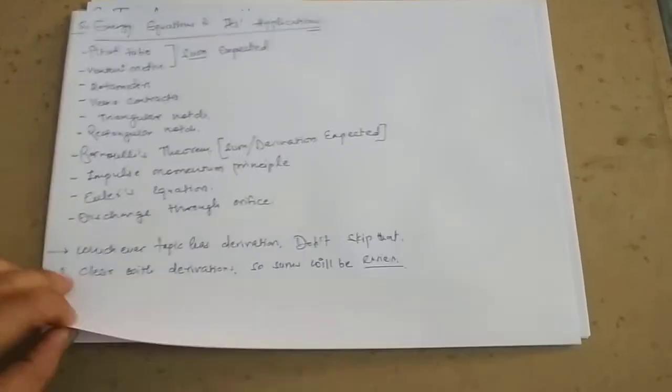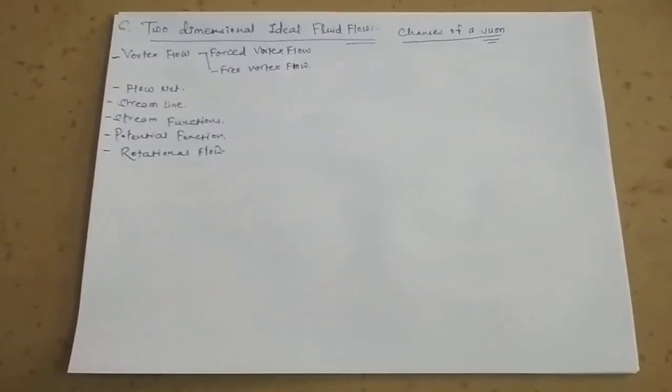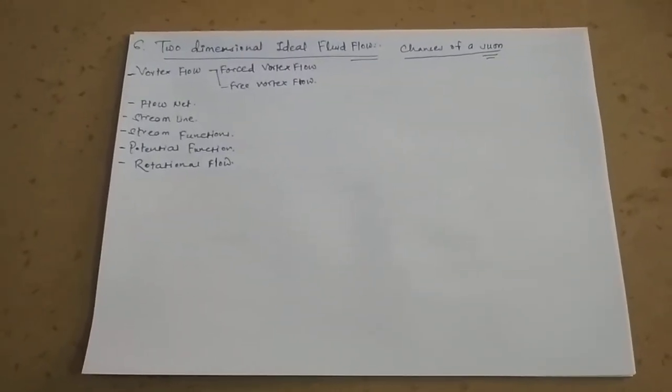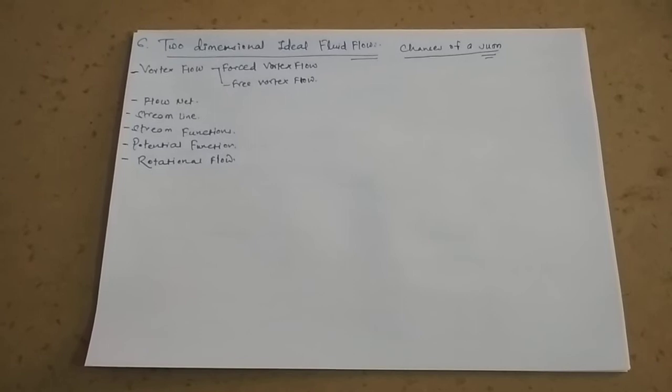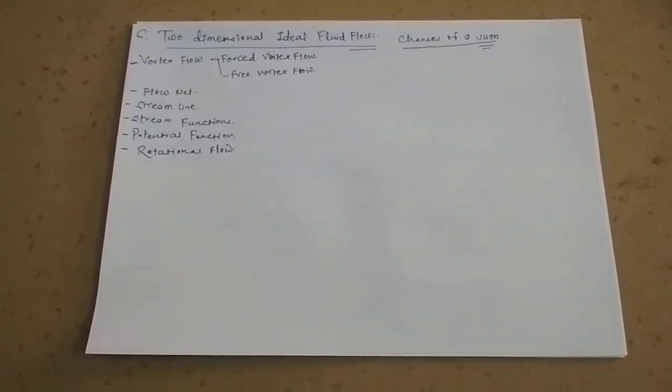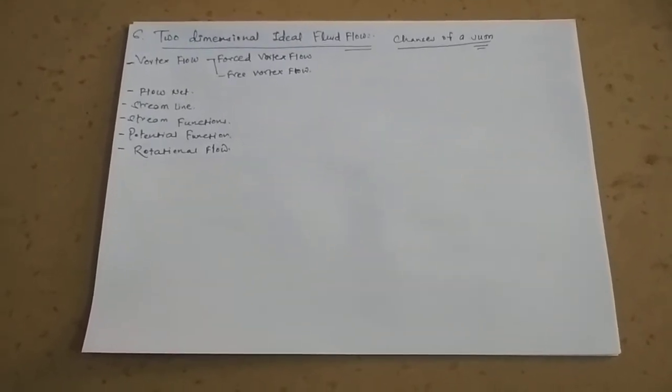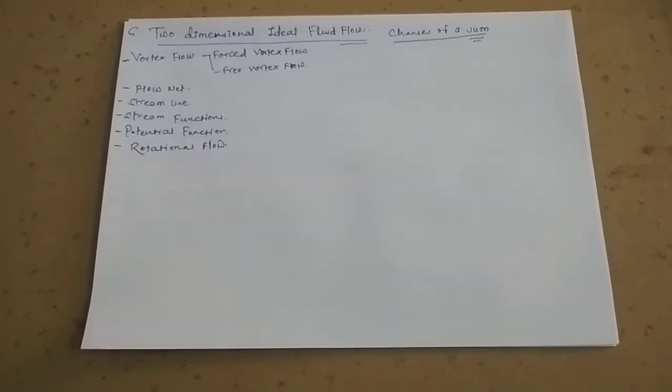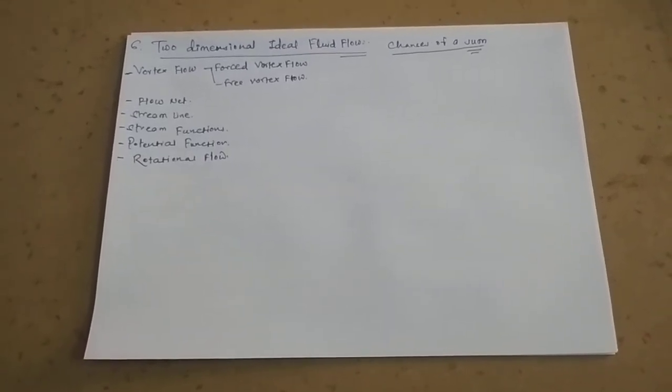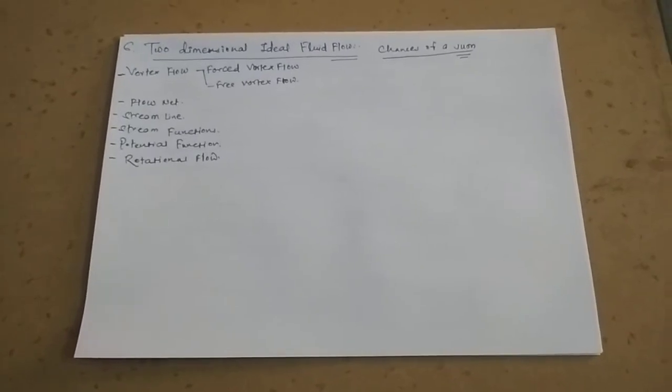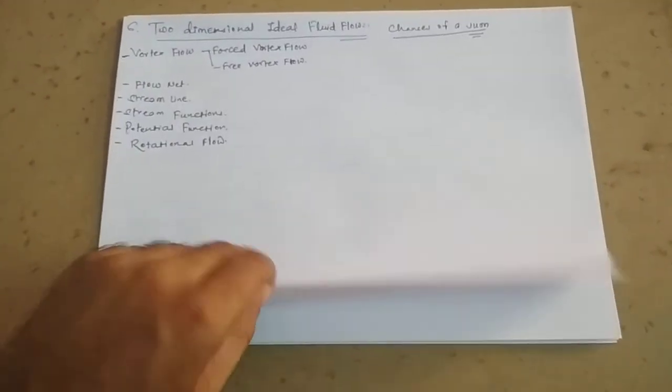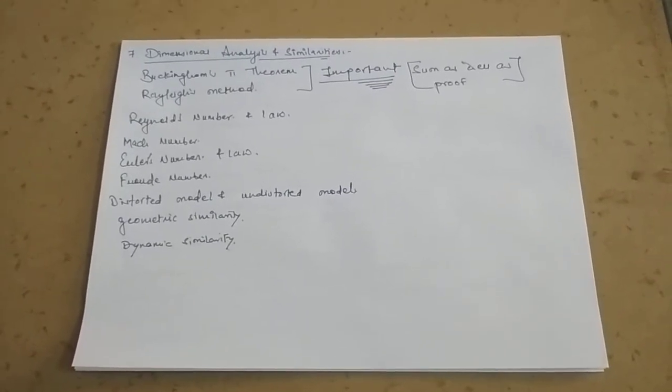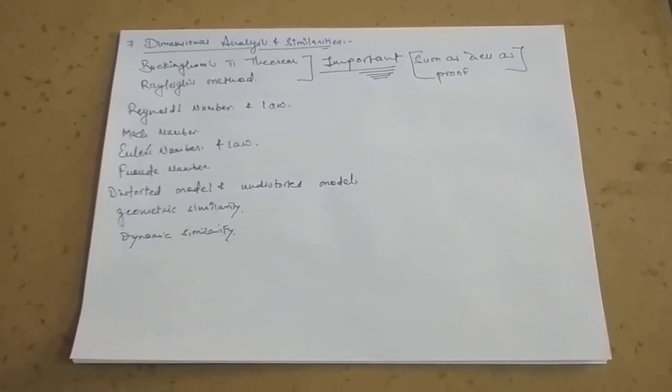There is a sixth chapter, Two-Dimensional Ideal Fluid Flow. You can do this only; there is no much weightage from this sum. There is a chance of some sum from this chapter. You can see sums from last years' papers, but I think these theories are enough for this chapter.